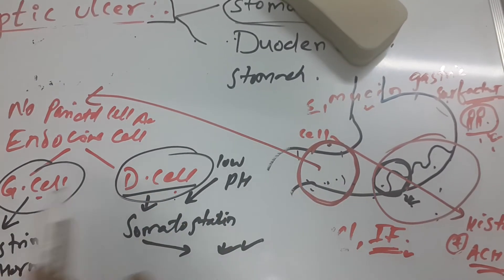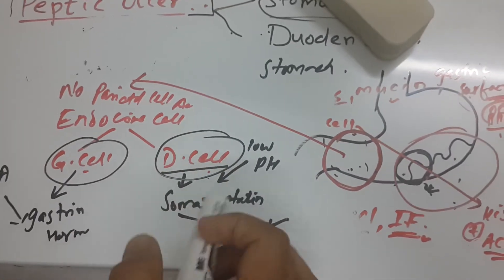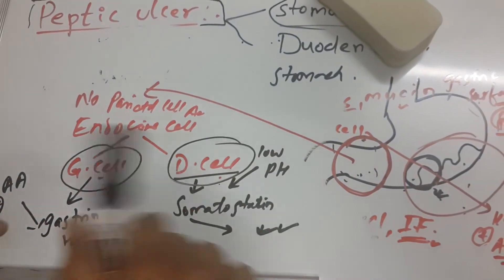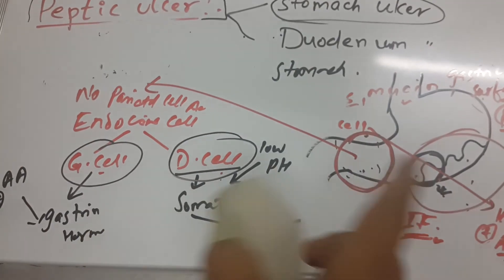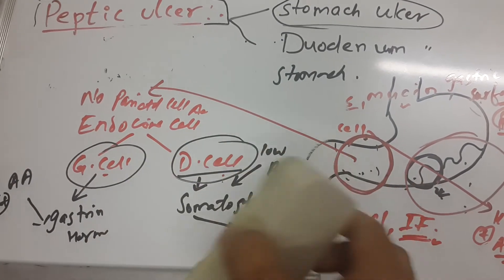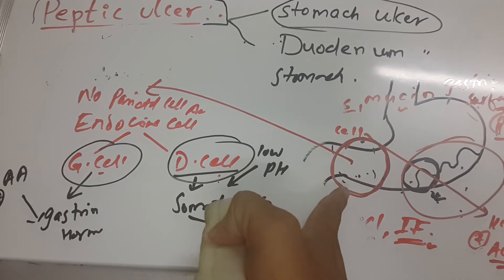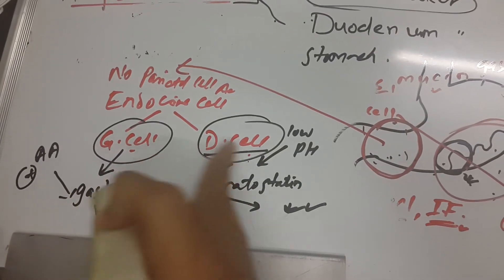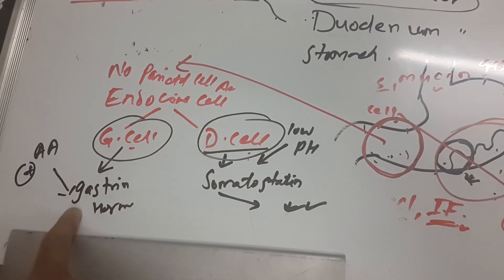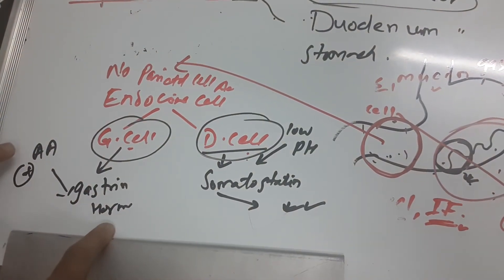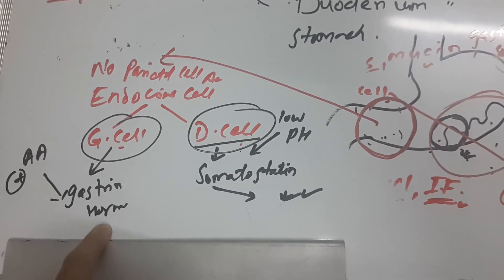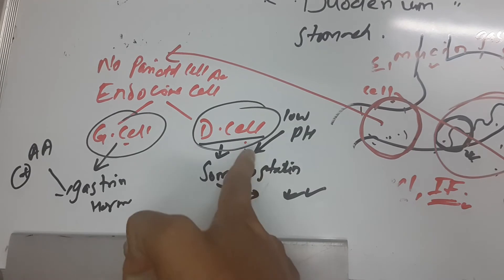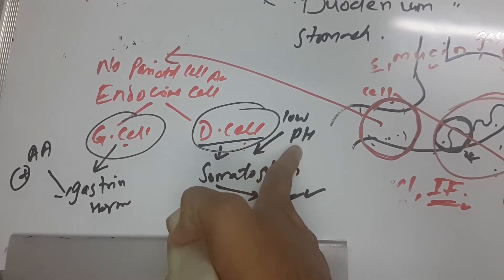These two cells lie in the pyloric part — the antrum of the stomach — and they are very important physiologically. They must work together to balance gastric secretion. In the antrum: G cells secrete gastrin, stimulated by amino acids; D cells (delta cells) release somatostatin, stimulated by low pH.